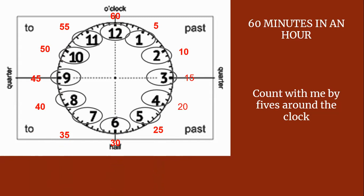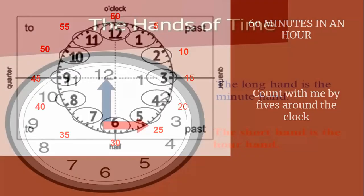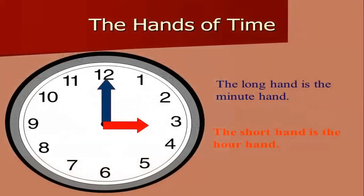Yay! You did it! The hands of time. The long hand on the analog clock is the minute hand. The short hand is the hour hand. The long hand tells how many minutes have passed. The short hand tells us which hour we are in.